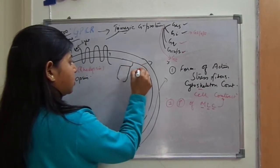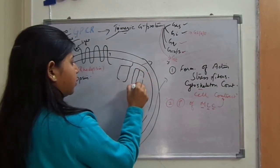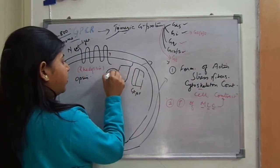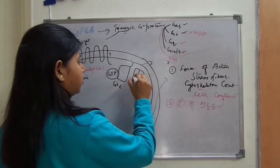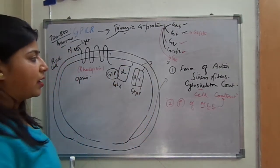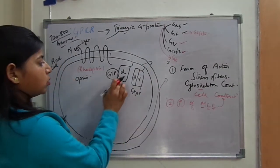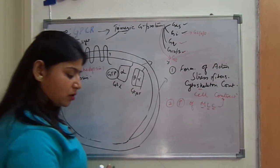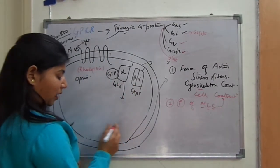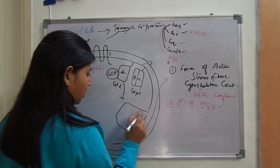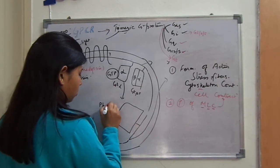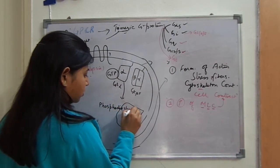Schematically, we have GT beta-gamma and GT alpha with GTP bound to it. This activated GT alpha is responsible for further signaling. GT alpha further activates an enzyme present in the membrane known as phosphodiesterase.